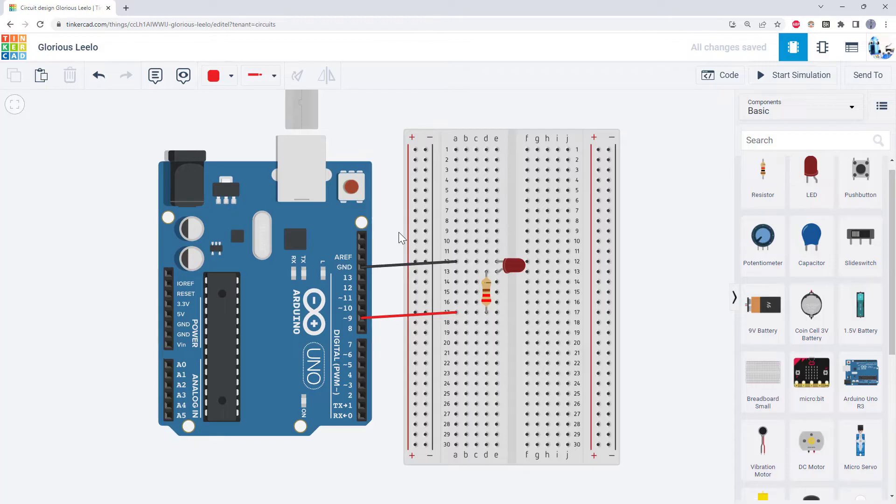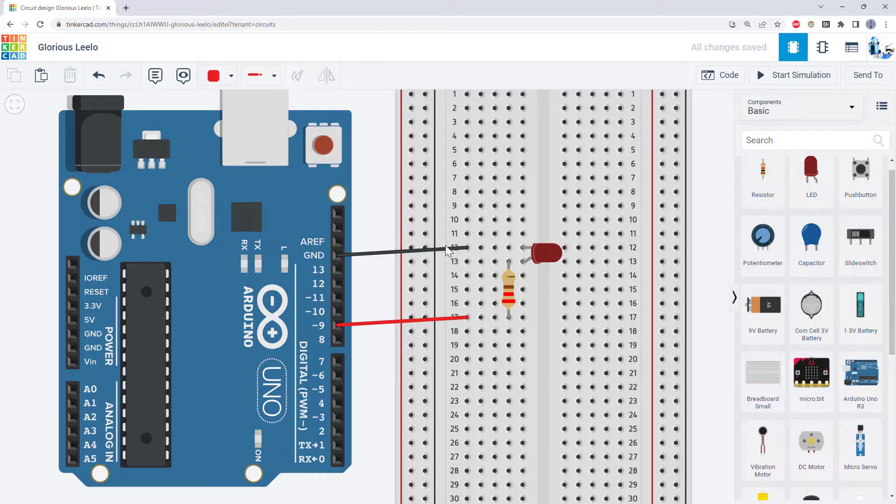We will very briefly switch over to Tinkercad which is an online circuit simulator that you can use if you do not have a physical Arduino. We have a separate video in this playlist that is an introduction to Tinkercad. It allows you to get a better view of the breadboard and exactly where everything is placed.